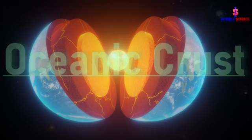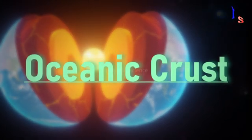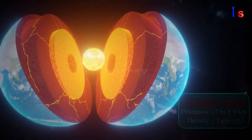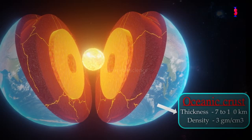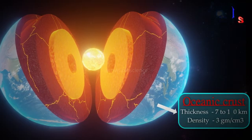Now let's talk about the second layer of the Earth which is called the oceanic crust. The thickness of this layer is approximately 7 to 10 km and its density is higher than the continental crust.